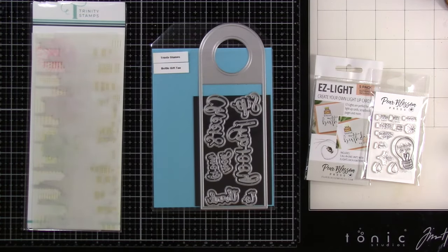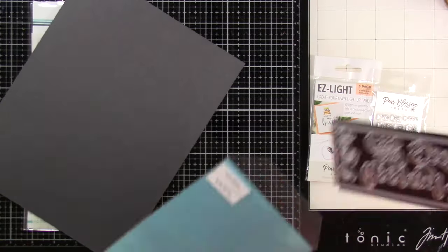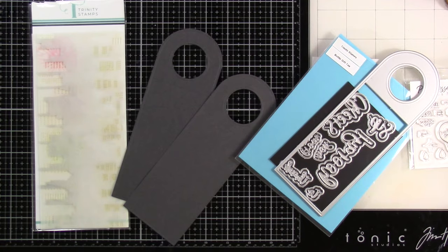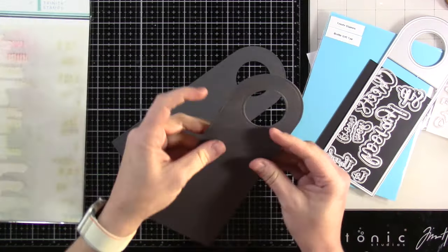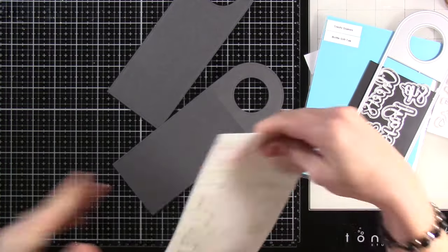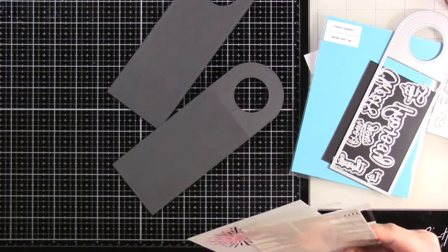So I'm going to need to trim down two of these tags. We're going to go ahead and run that through our die cutting machine. We have two of them. I love this tag because it has an embossed edge all around the outside, and you can put this over whatever bottle you plan to bring to your next function.